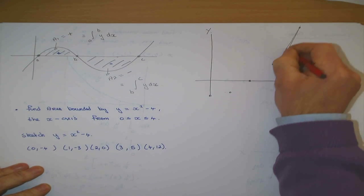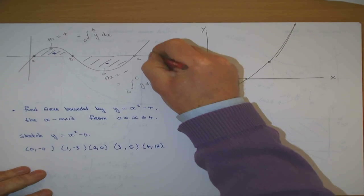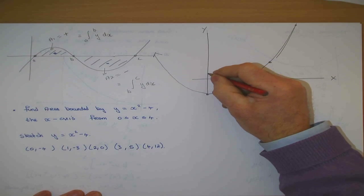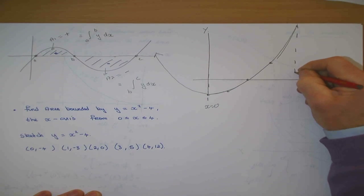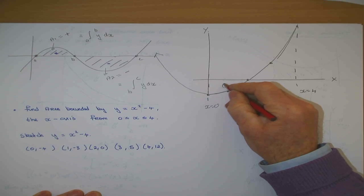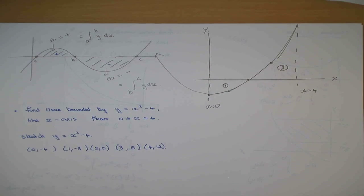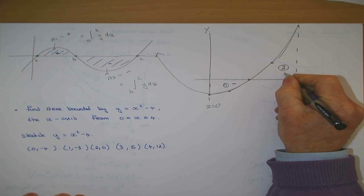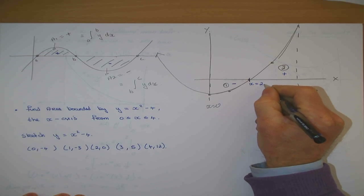So the graph turns and goes back up — it's an x squared graph, a U-shape. I'm working out the area between the curve from x equals 0 to x equals 4. The area below the x-axis is one region, and the area above is the second region. I know the first area is going to be negative and the second positive. Therefore they must be treated separately, and I need to know the key value — x equals 2 — where the curve crosses the x-axis.